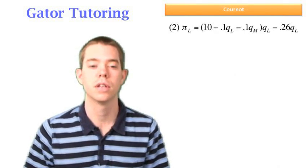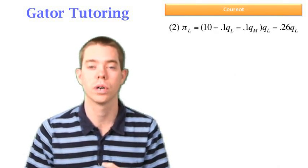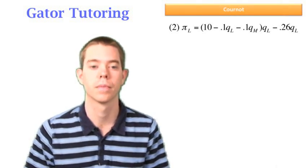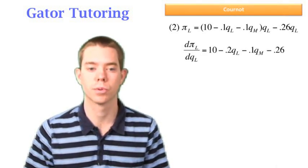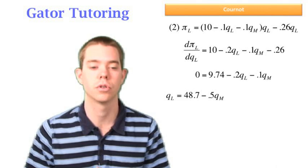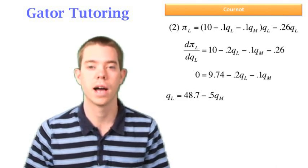So now we need to do that process again, with now $0.26 as his cost, per unit cost, it's constant. So we're going to take the derivative with respect to QL, set it equal to zero, and again, same process, just doing it over again with the new cost. Find a new reaction function for Larry.